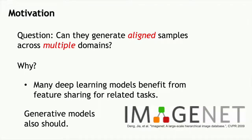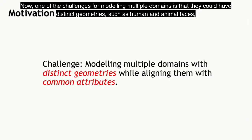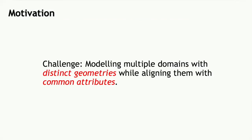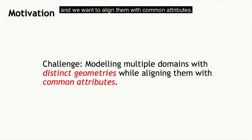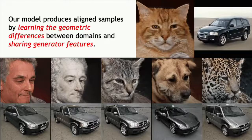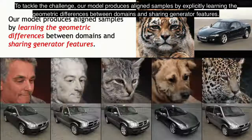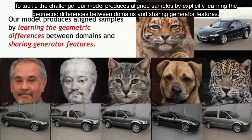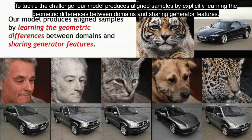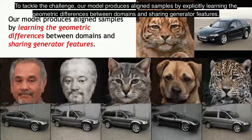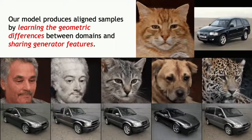One of the challenges for modeling multiple domains is that they could have distinct geometries, such as human and animal faces, and we want to align them with common attributes. To tackle this challenge, our model produces aligned samples by explicitly learning the geometric differences between domains and sharing generator features.